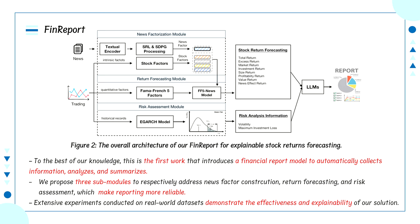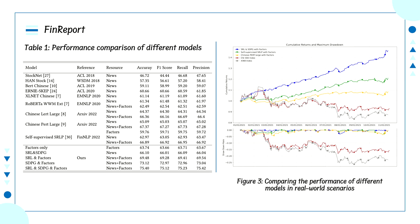Extensive experiments conducted on real-world datasets demonstrate the effectiveness and explainability of our solution. In Table 1, we can see that our methods outperform the baselines that utilize news and factor information across four different metrics. We also include the real-world stock trading backtest in Figure 3, which shows that our method has better robustness and higher return rates than other baselines.